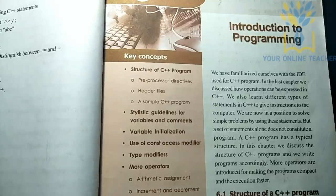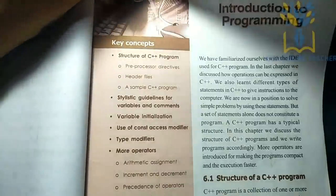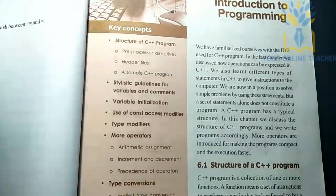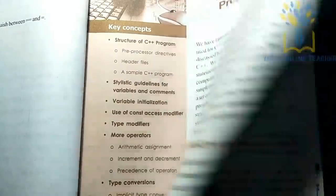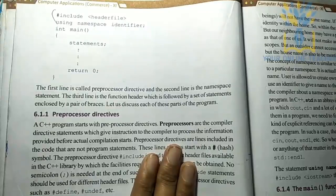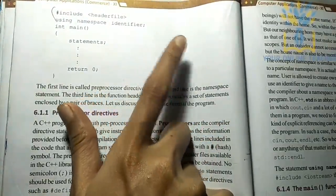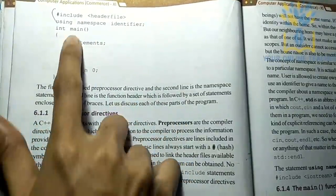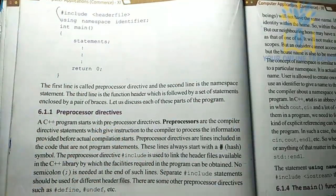Welcome back to my channel, your online teacher. In the 6th chapter, we are going to go to the introduction to programming in C++. We will go to the programming of C++. For example, we have a header file, using namespace, and main statements. We are going to close the open braces. This is just a simple form of C++ programming.